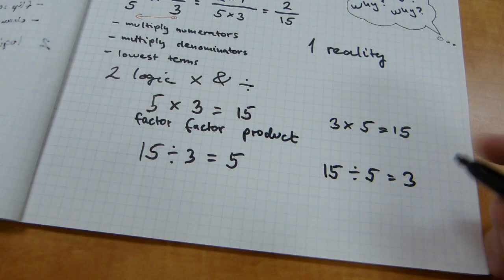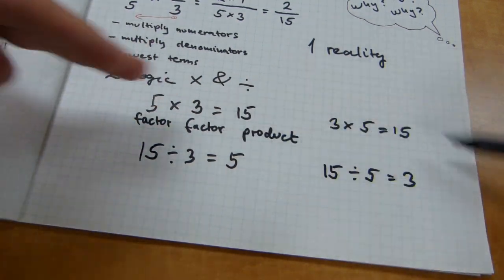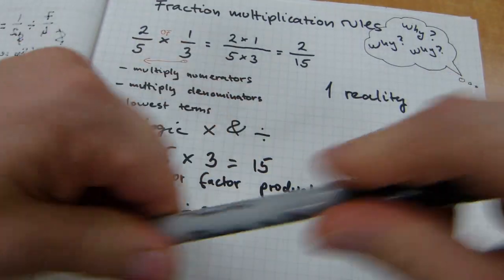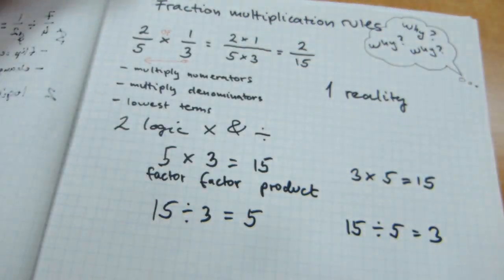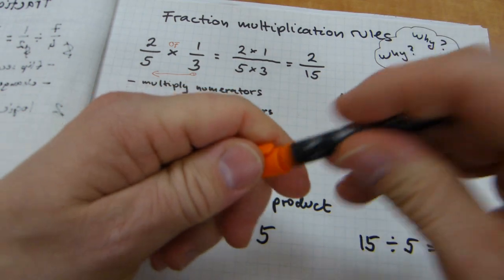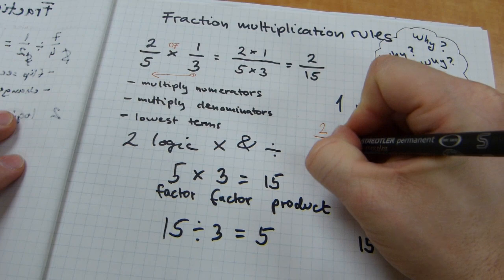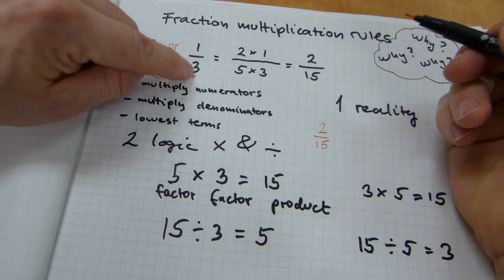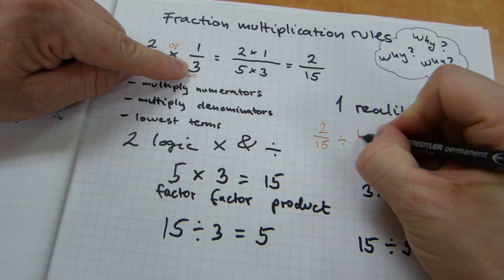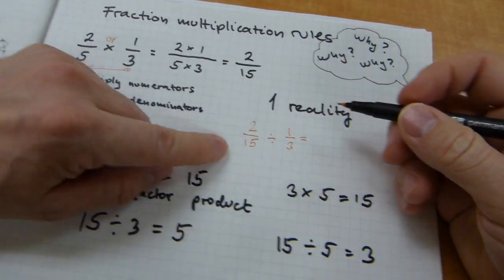So, same thing. Multiplication and division need to be mirror opposites of each other. Okay, I hope that makes sense. So, that also means that if you grab this chocolate bar example, and work with 2 fifteenths being the product, if you start with 2 over 15, and you divide it by that factor, 1 over 3, you must get 2 fifths. Let's see if we do get 2 fifths.